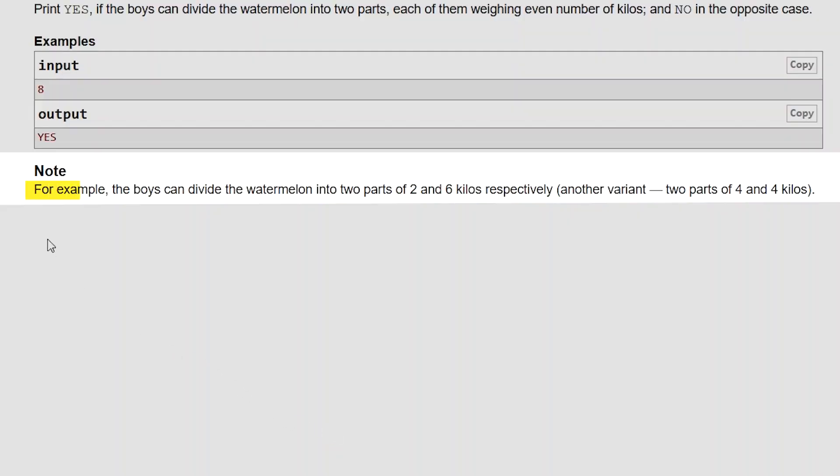What did you notice in the text? For example, the boys can divide the watermelon into two parts of two and six kilos respectively, which can be in four and four kilos. How can we solve this problem? Even number plus even number equals even number, so the sum of them should be even number, so W should be an even number.